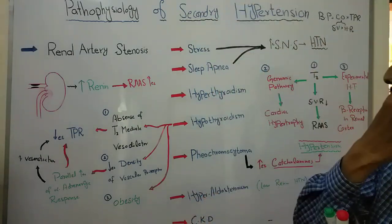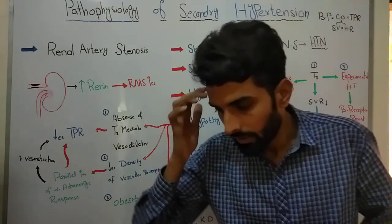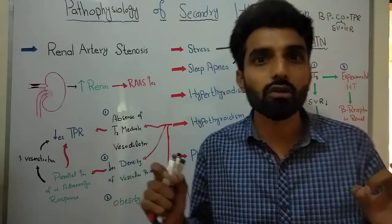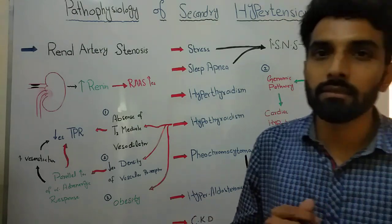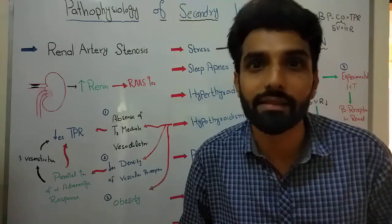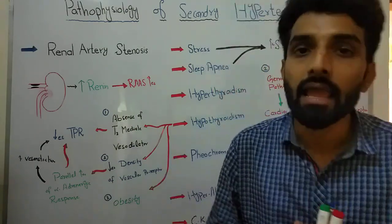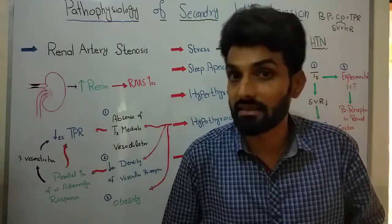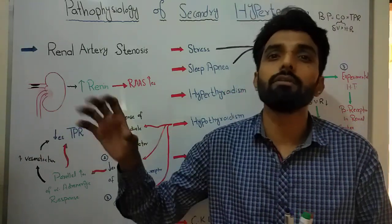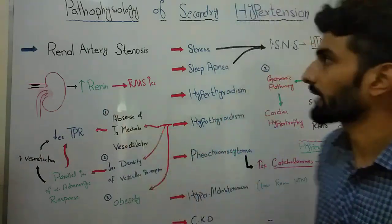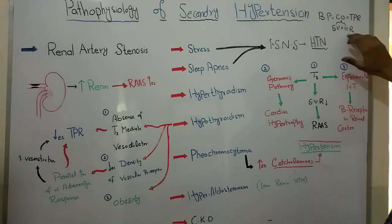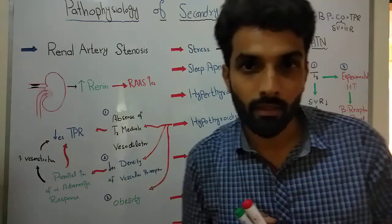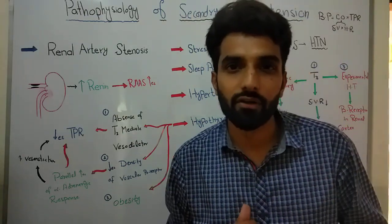The second condition is stress and sleep apnea. Whenever you are in stress, your sympathetic system is activated. When the sympathetic system is activated, the level of catecholamines — epinephrine and norepinephrine — will be high. They act on beta receptors on the heart, increasing the force and rate of contraction, which increases stroke volume and heart rate, ultimately increasing cardiac output and causing high blood pressure.